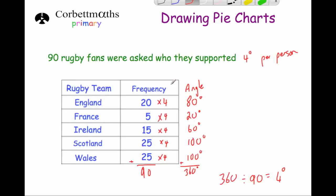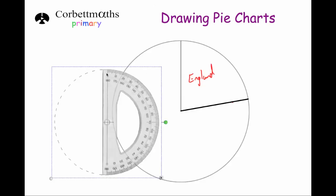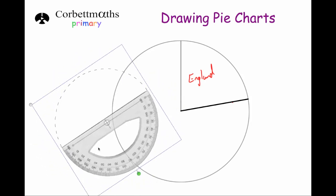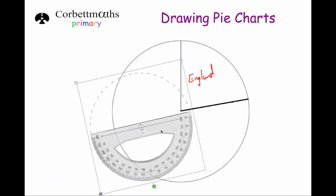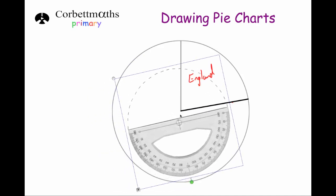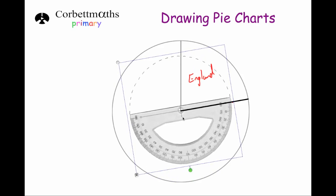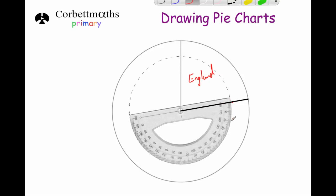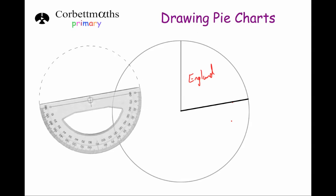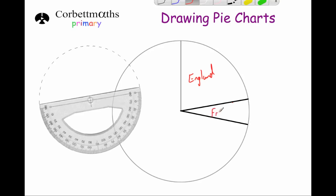The next region is for France and that's 20 degrees. Get the protractor, look at where the zero on the outside is, and rotate it so it lines up with the line we've just drawn. Make sure the cross goes on the centre. Line up zero with the line, go around to 20 degrees and make a dot. Move the protractor, get a ruler and draw a line from the centre through the point to the edge of the circle. Label that section France.